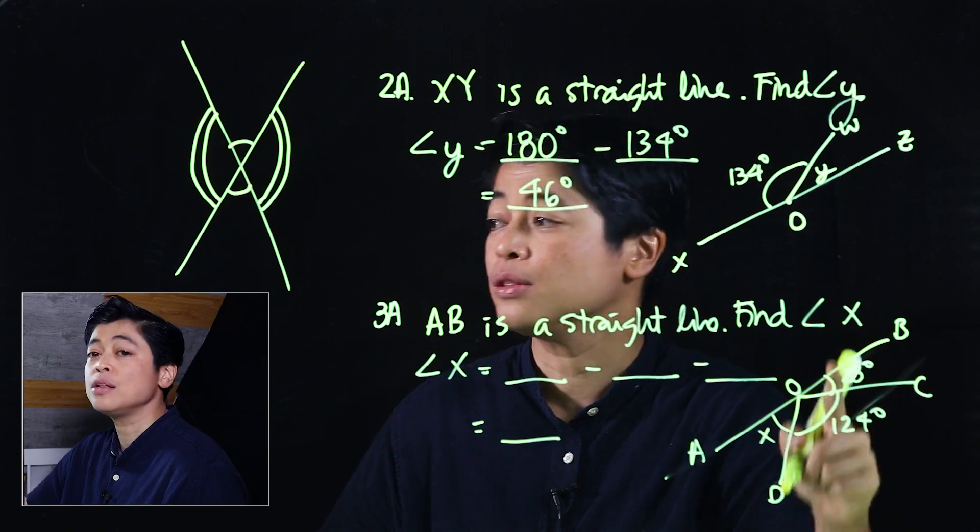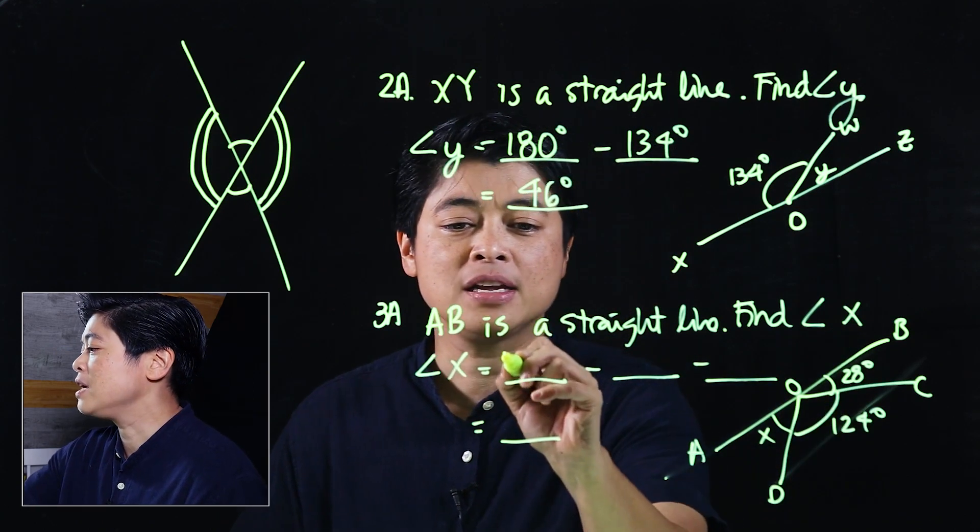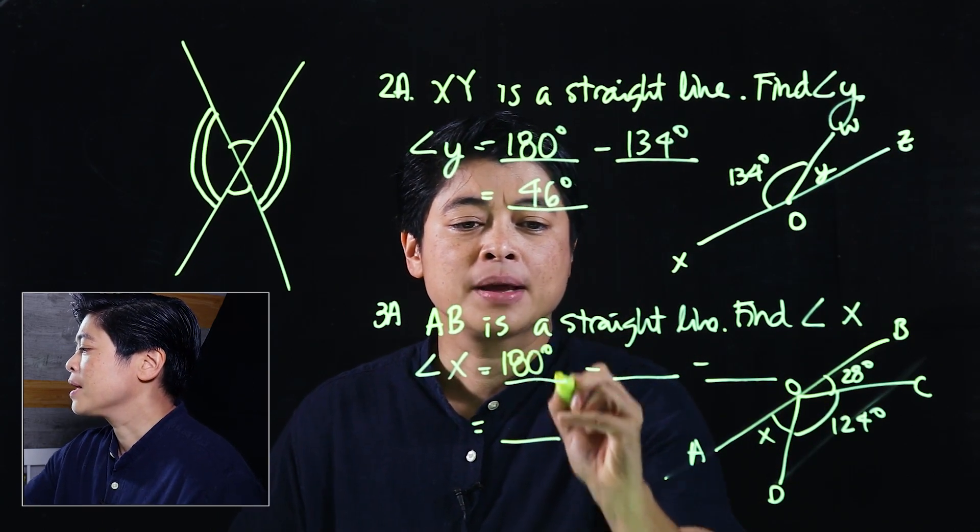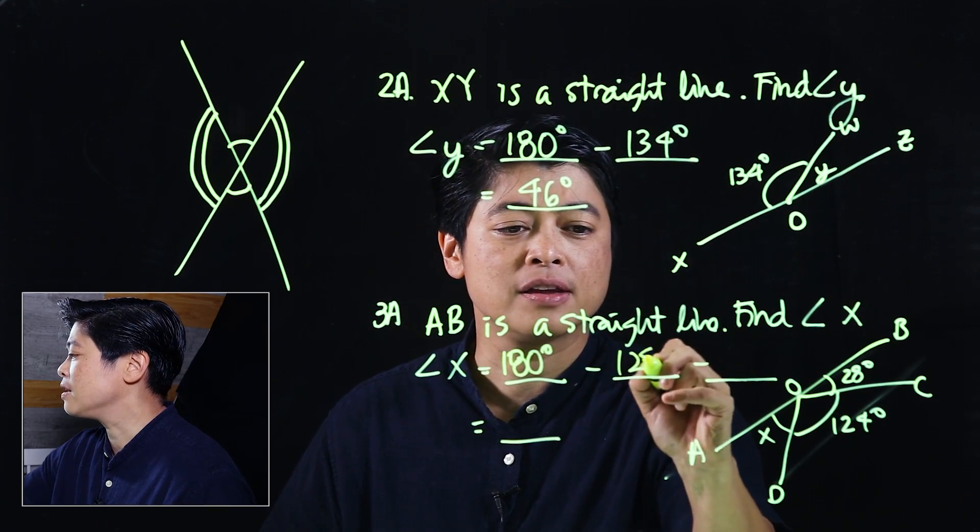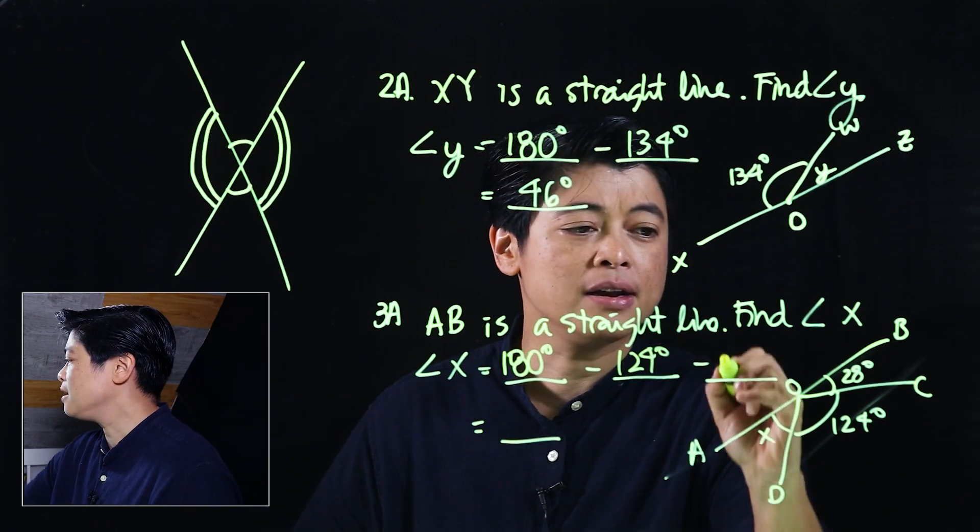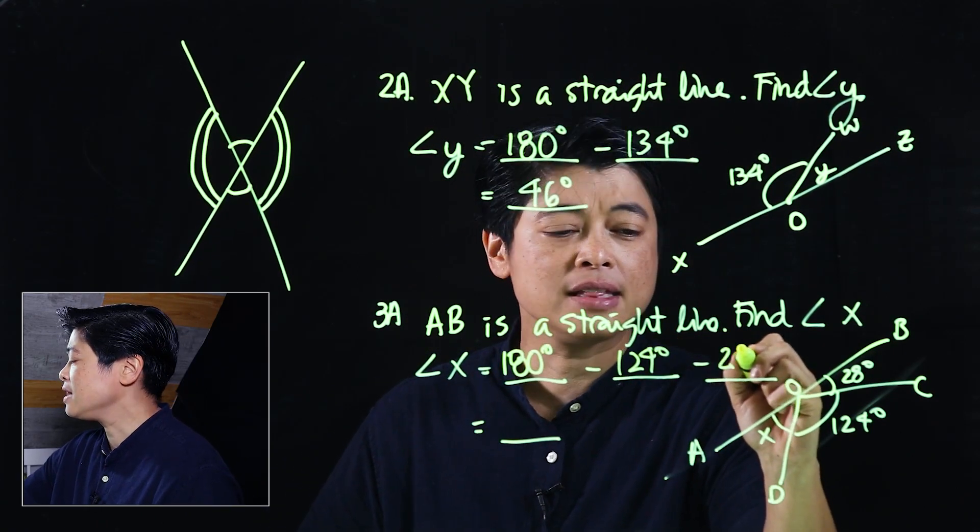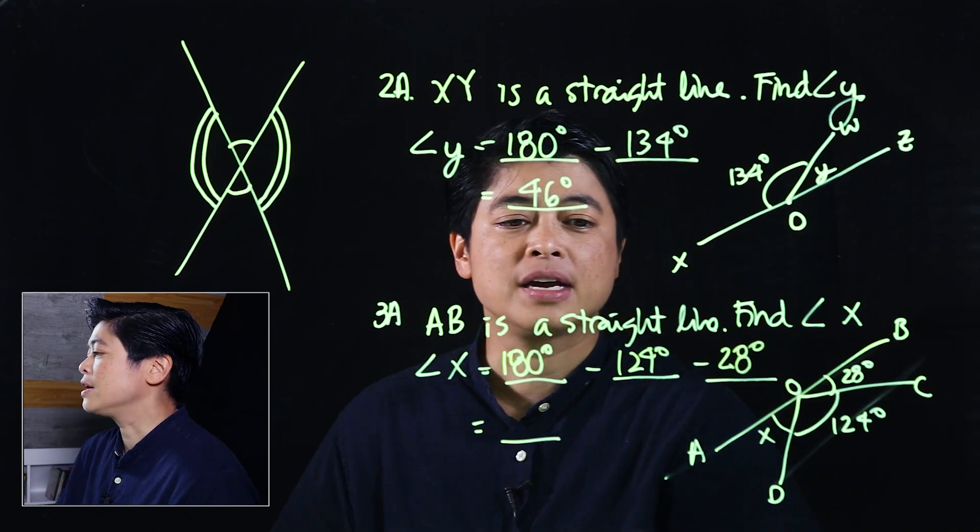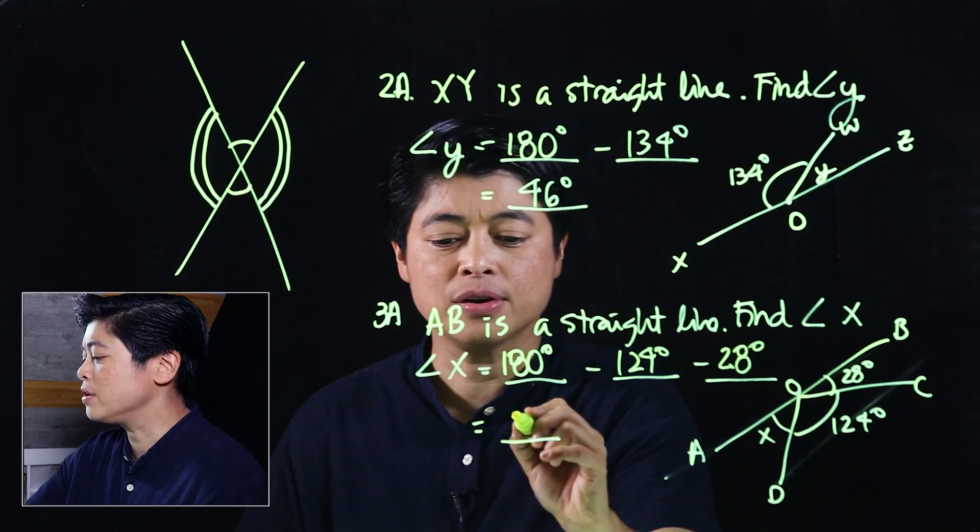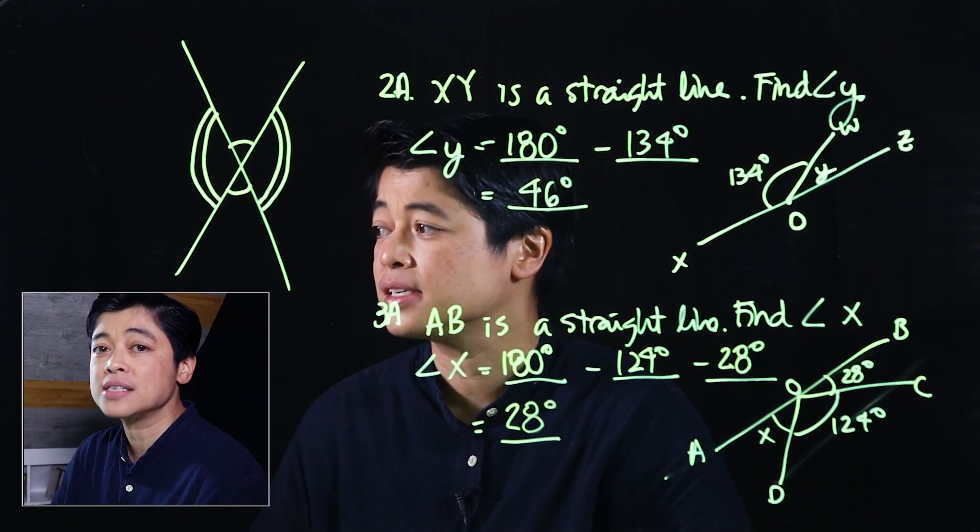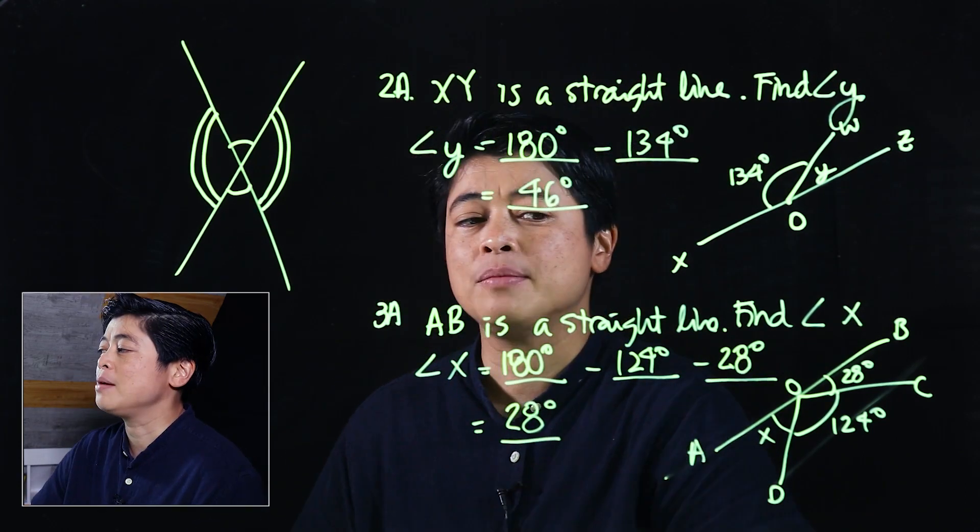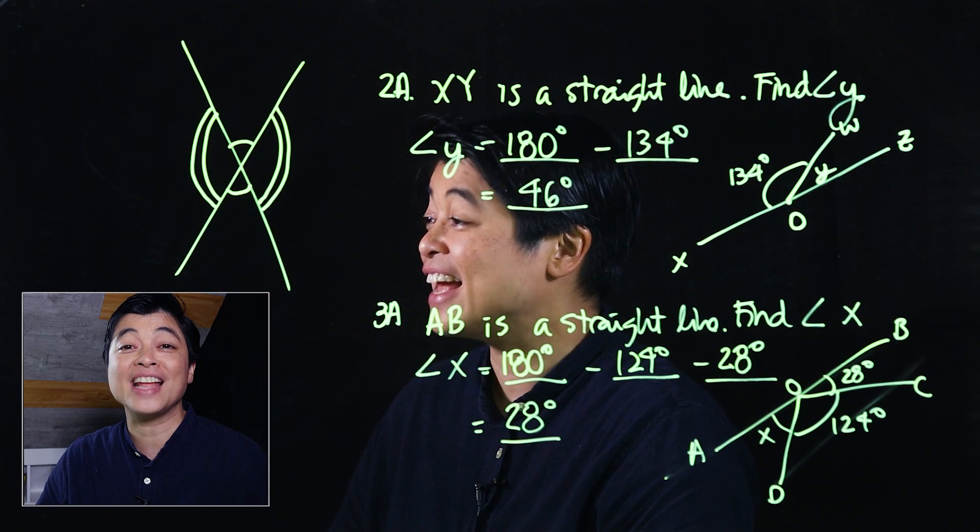That's why there's a minus and a minus, because to get angle X we need to subtract the 124 and the 28. That means 180 minus 124 degrees minus 28 degrees. If we subtract all of those, we will also get 28 degrees. So is it always the same? No, that's only coincidental.